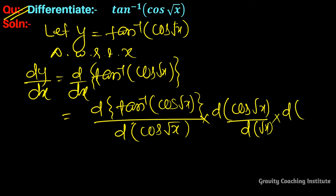Now we'll differentiate root x. The tan inverse formula is 1 upon 1 plus x square, so in place of x we have cos, giving 1 plus cos square root x. The derivative of cos is minus sin x, so minus sin root x times 1 upon 2 root x.